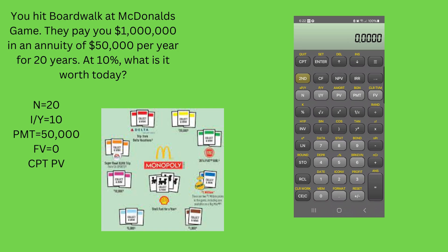So here's a question — and there are a lot of companies that do this out there. If you were to go get a cash offer today instead of the $50,000 a year for 20 years, what would that cash offer be? In other words, what is the present value of this annuity today?